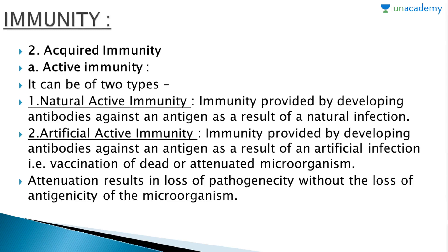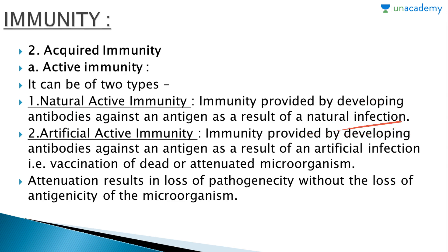Active immunity can be of two types: natural active immunity and artificial active immunity. Natural active immunity is provided by developing antibodies against an antigen as a result of natural infection. Artificial active immunity is provided by developing antibodies against an antigen as a result of artificial infection, that is, vaccination.